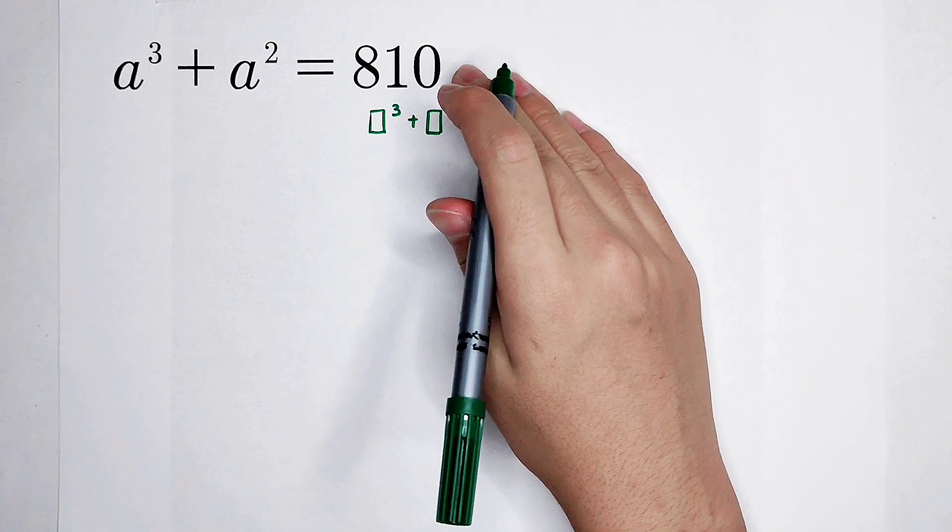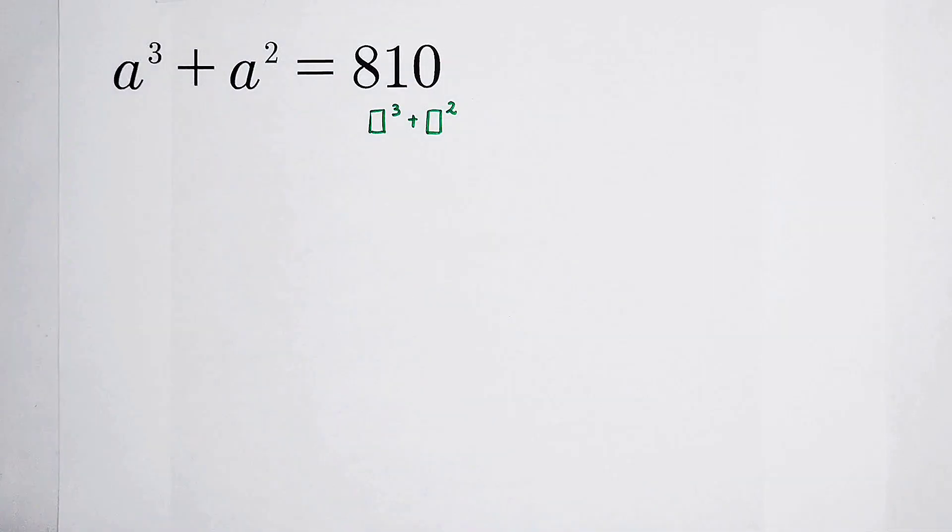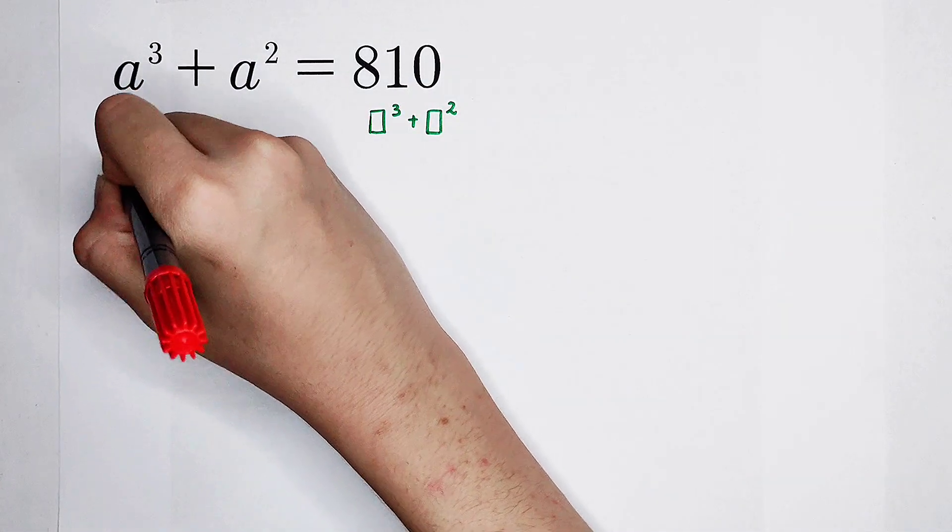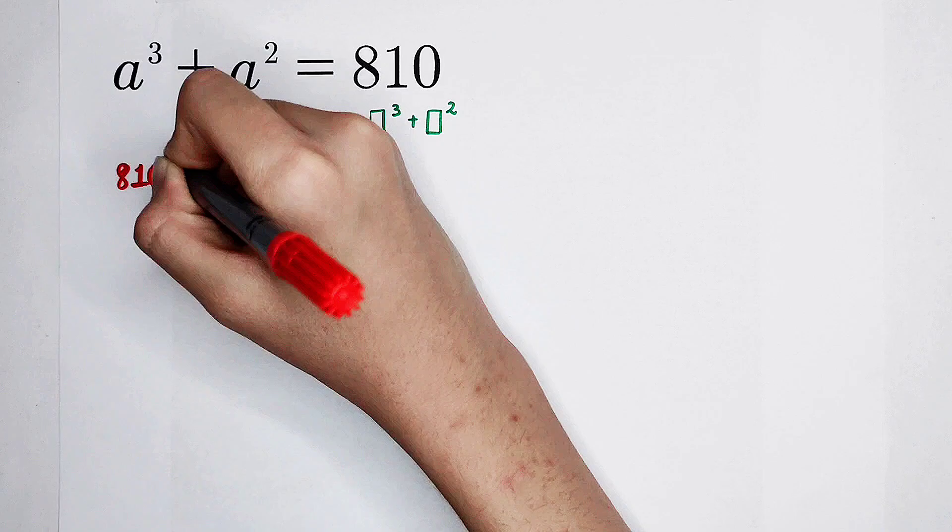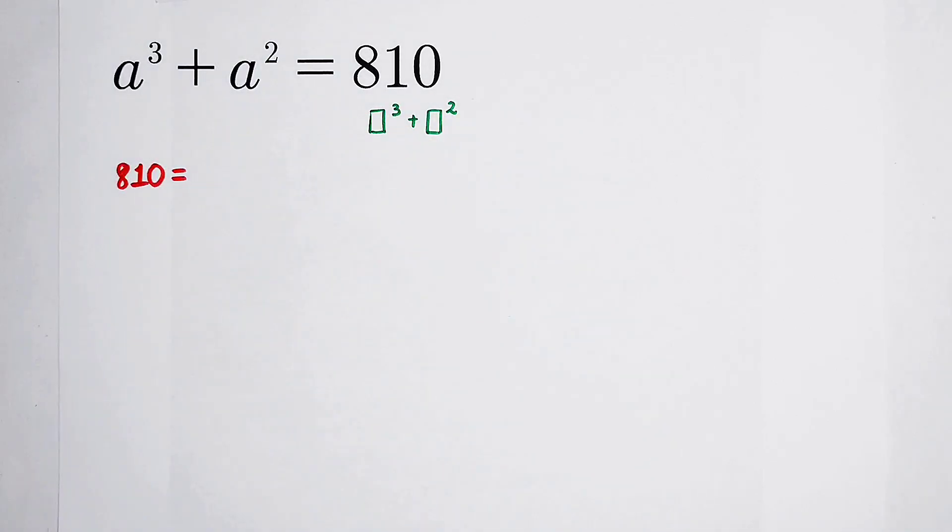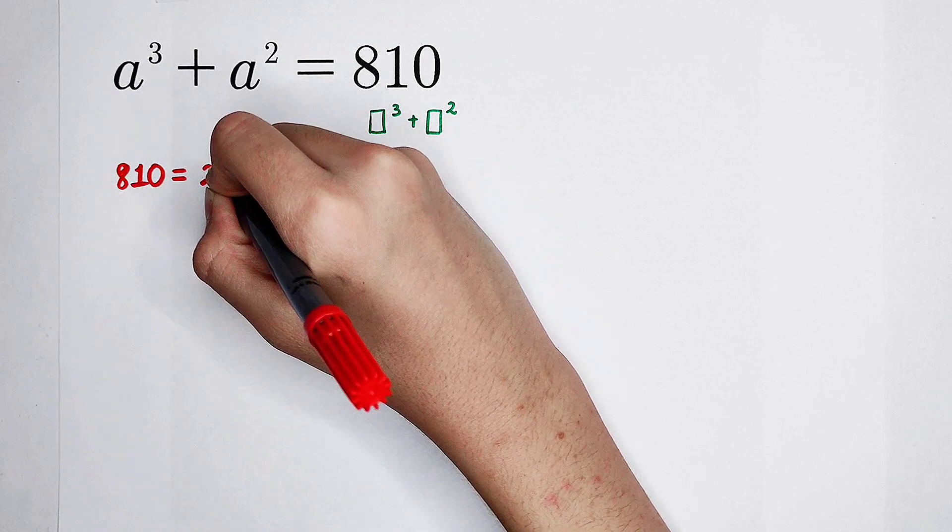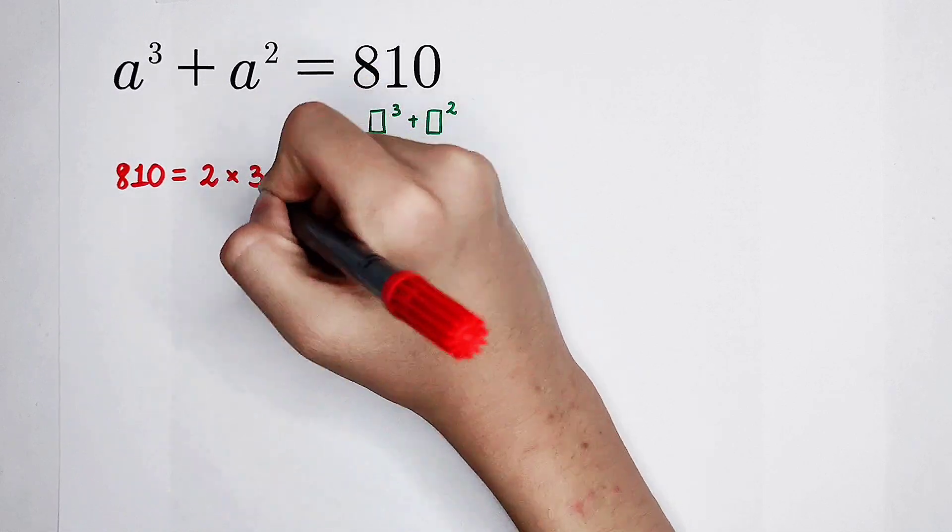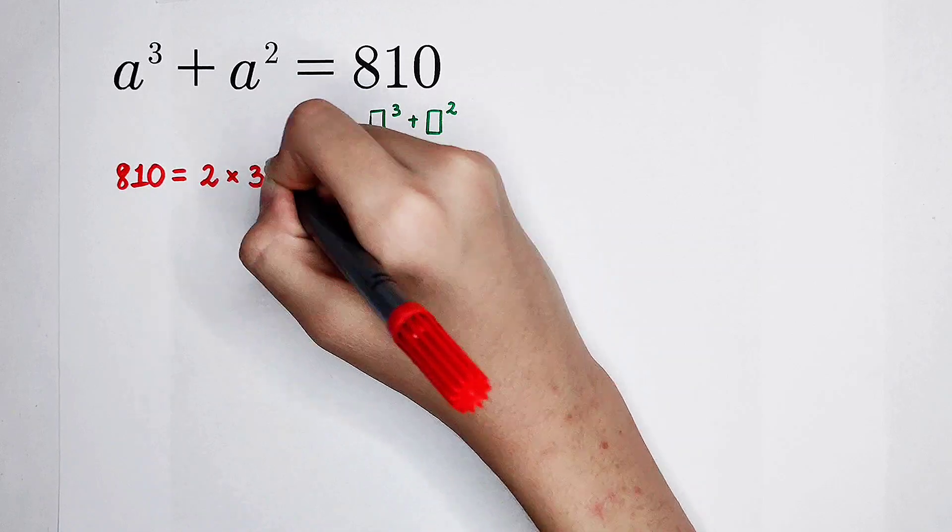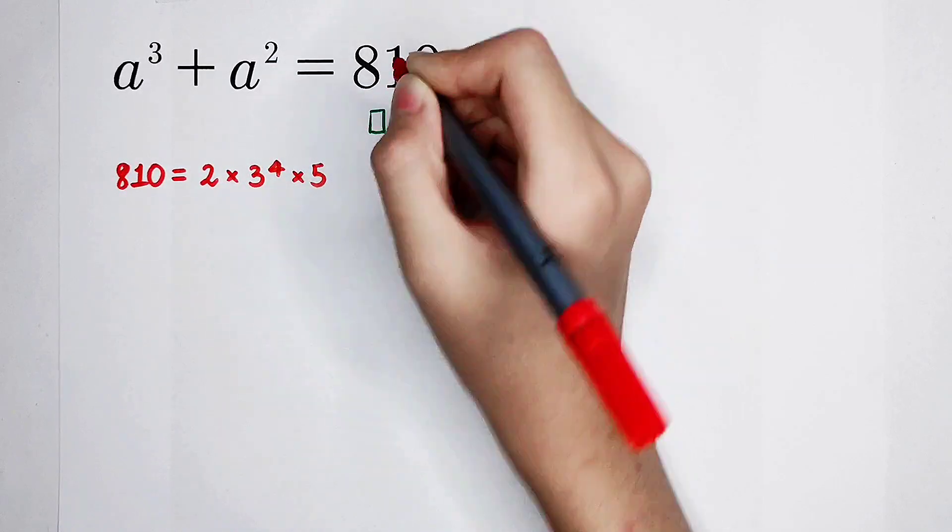We should find the prime factors of 810. 810 can be written as 2 times 3, then times 3, and then times 3, and then times 5. That is, 2 times 3 to the power of 4, and then times 5.